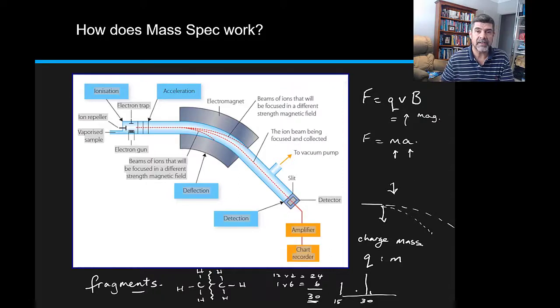But again, you still need other data to look at that because this is just giving you information about masses. What's nice is if we get fragment data as well and we start to know that, for example, a CH3 group has a mass of 15, then either we can look for peaks at 15 or we can